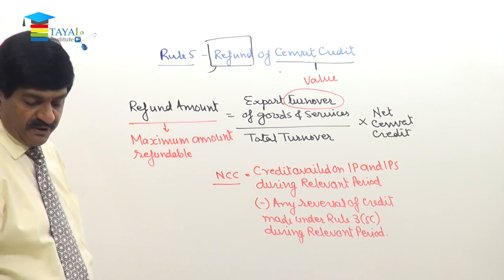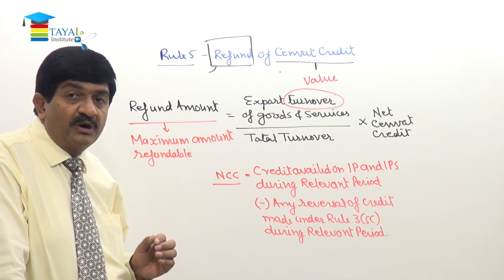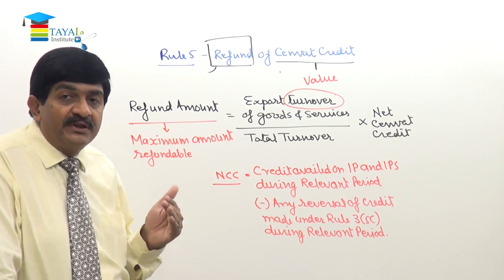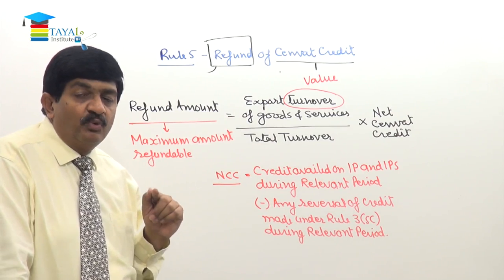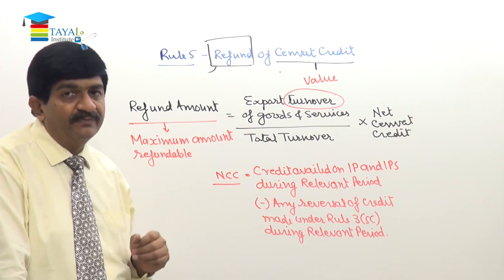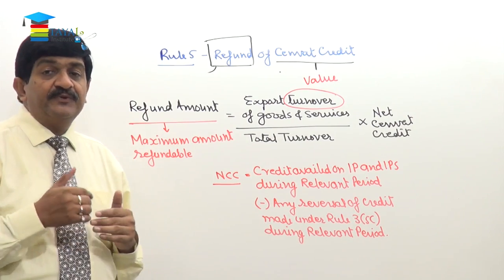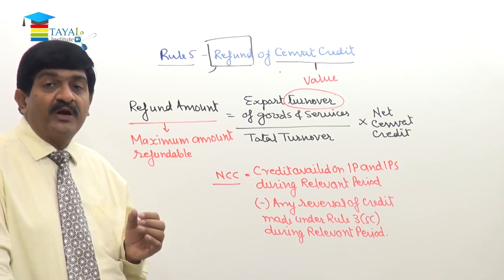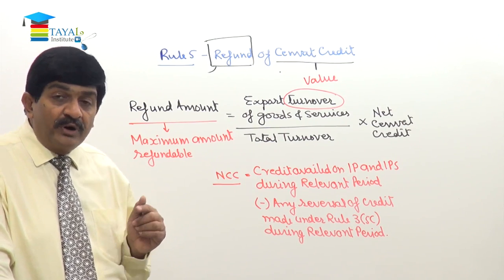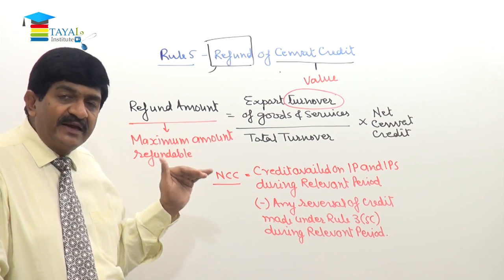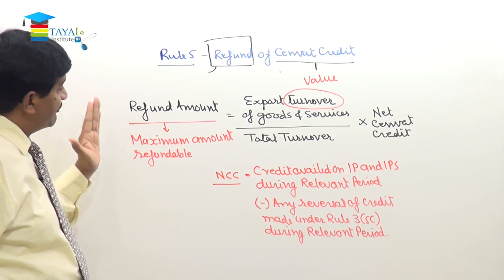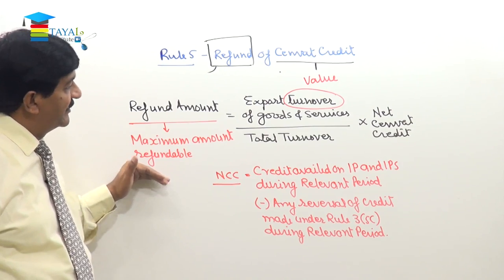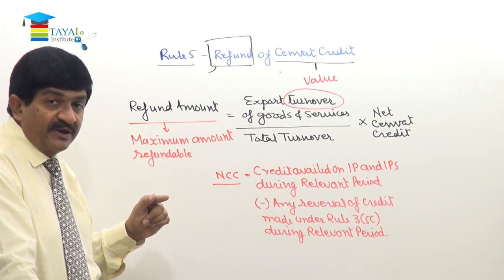So for understanding rule number five: refund is a kind of incentive — actually it is lowering the cost by avoiding the taxation applicable for DTA. CENVAT credit is refundable only in respect of inputs and input services; the credit of capital goods is never refundable in cash. This rule says if goods are exported without payment of duty under bond, or services are exported as per Rule 6A of the Service Tax Rules, then the manufacturer or service provider is eligible for refund of CENVAT credit on inputs and input services used in relation to the exported goods or services.